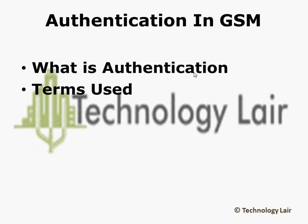Terms used in the authentication process. KI is the individual subscriber authentication key. It is a 32-bit number that is paired with the SIM card when the SIM card is created. KI is only stored on the SIM card and the authentication center.